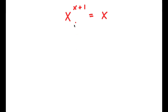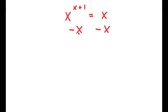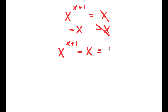In this problem I have x to the power of x plus 1 is equal to x. To solve this I'm going to start by subtracting x on both sides. These two cancel out and I'm left with x to the power of x plus 1 minus x is equal to 0.